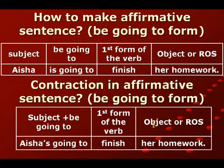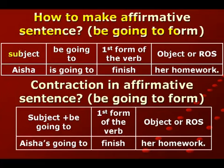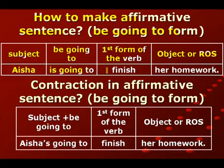قبل ما نبدأ درس اليوم، نتكلم شوي عن how to make affirmative sentences في be going to form. إذا نبغي نكتب الجملة الثابتة في زمن المستقبل البسيط في النوع الثاني، أول شي نحط subject أو الفاعل، وشي ثاني نحط be going to، وشي ثالث نحط first form of the verb يعني أول حال الفعل، وأخيراً نحط object أو rest of the sentence.